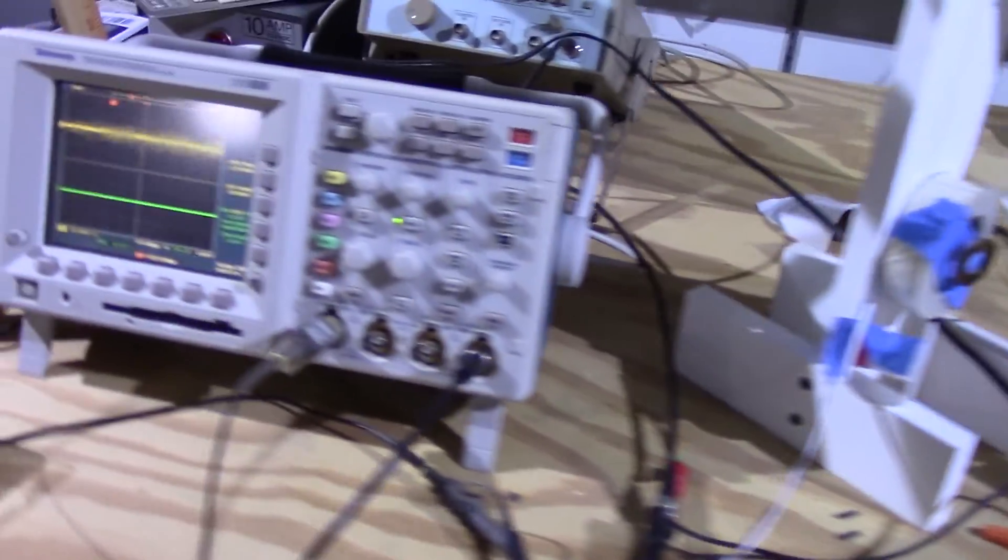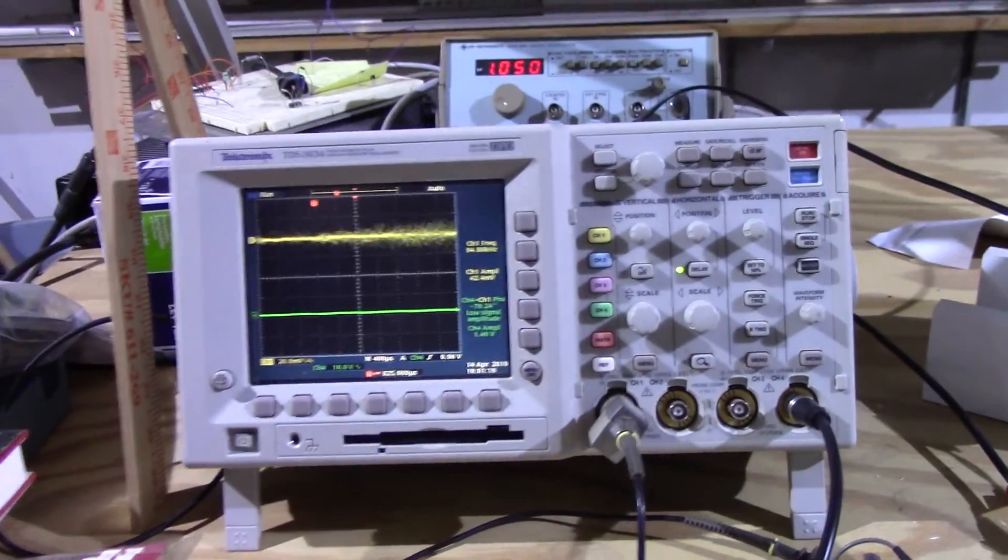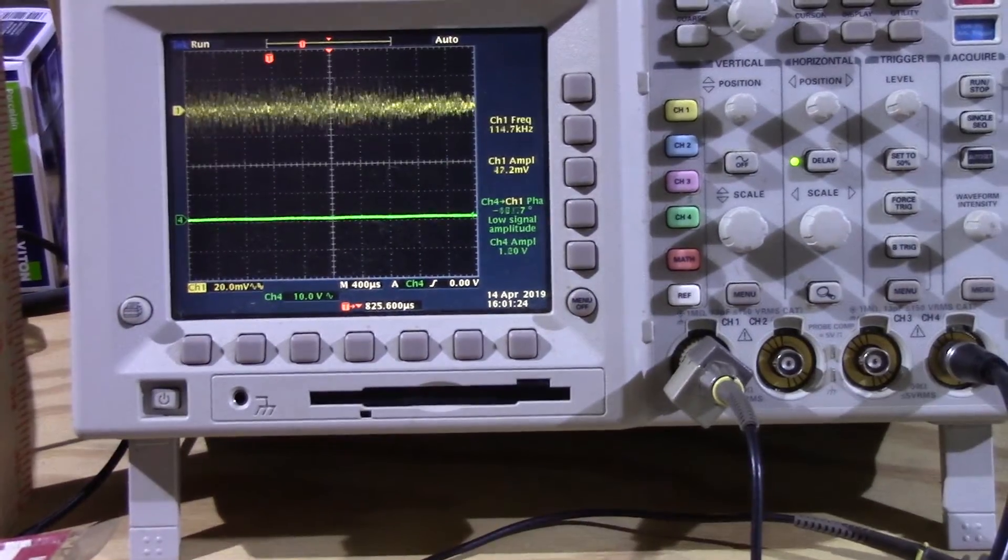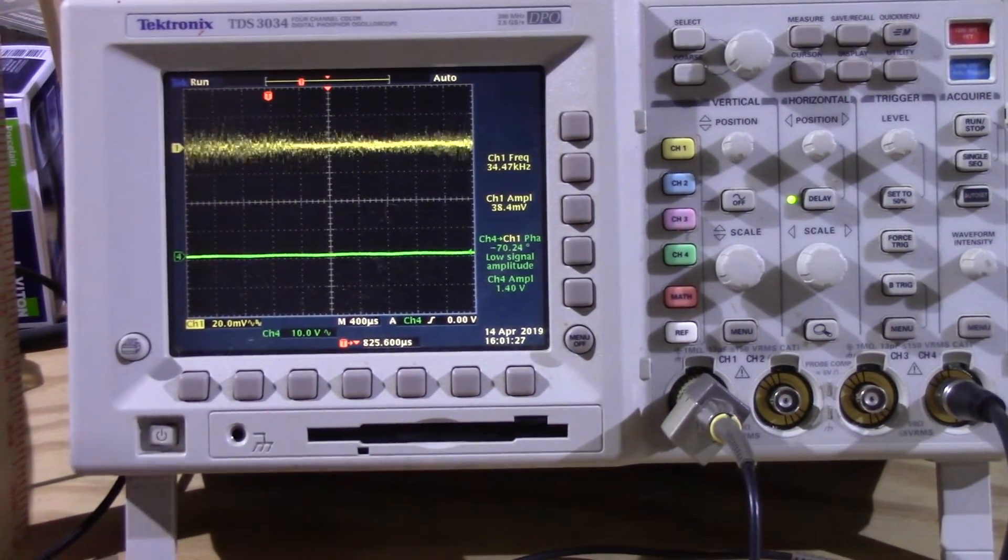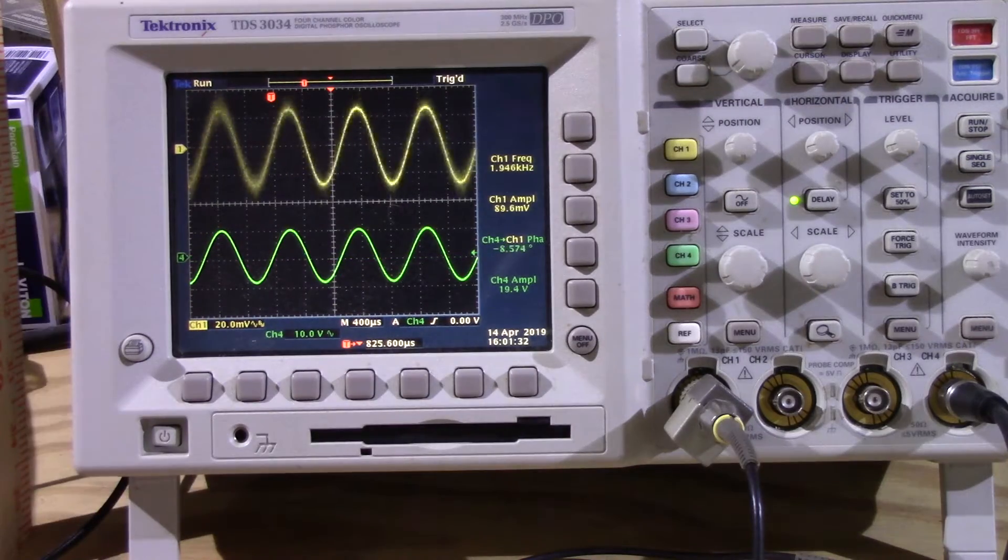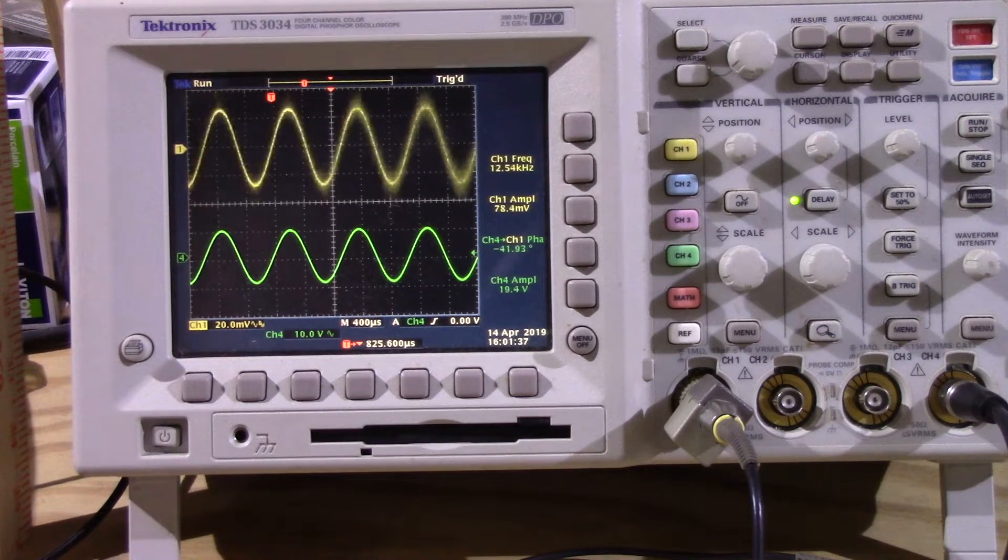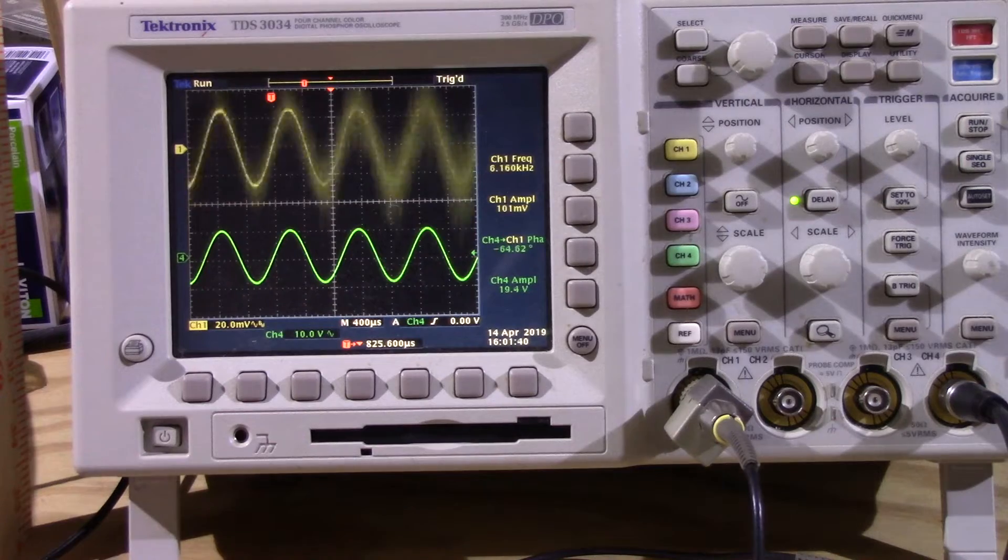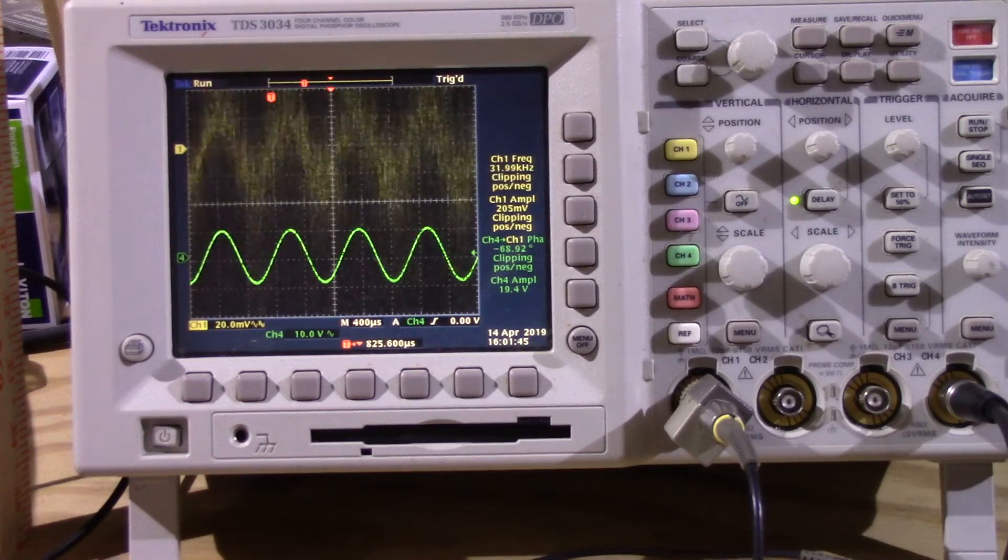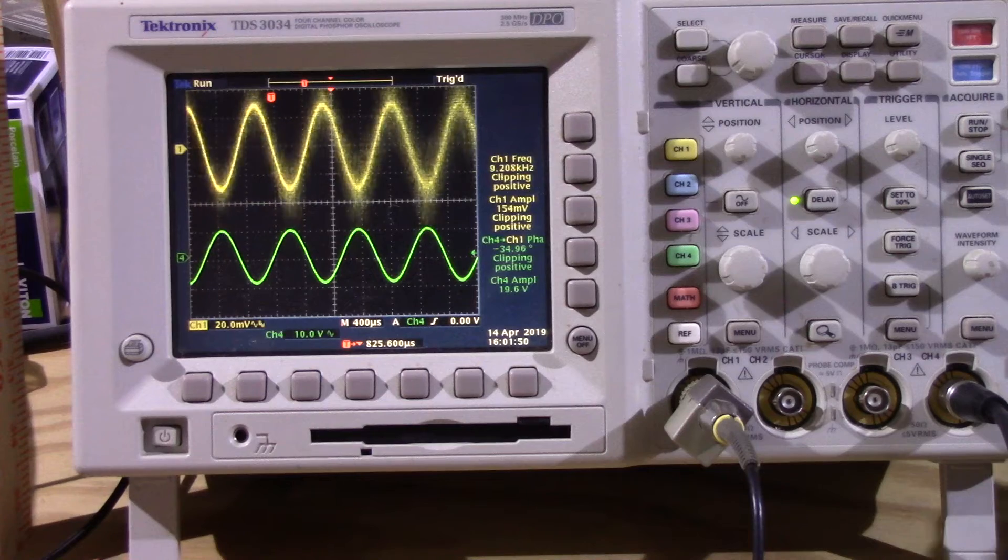What we have over here is the oscilloscope setup. Hold on, let me get the camera adjusted. I'm turning the power back on. The green trace is the voltage coming from the signal source. The yellow trace is coming from a little pickup coil that I have sitting right next to the magnet coil, so I can monitor the signal.